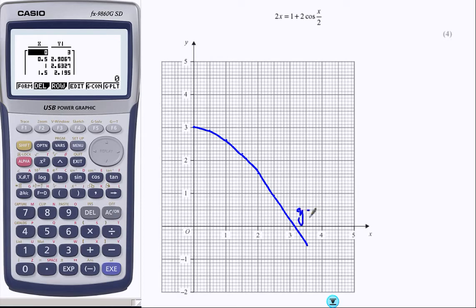So we have the graph of 3 cosine of x over 2, and we have this. Now this would be fine if we wanted to solve 1 plus 2 cosine of x over 2 equal to 2x, but we don't.